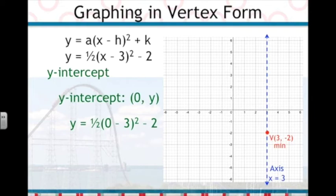Now we have the equation y equals 1 half times the quantity 0 minus 3 squared minus 2. As we simplify this to solve for y, we have 0 minus 3, which is negative 3. Negative 3 squared is a positive 9, giving us y equal to 1 half times 9 minus 2.